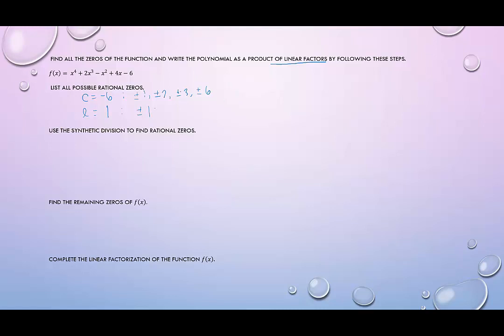But in this case, since it's only positive and negative 1, it's just going to be these six, eight values there. So the possible rational zeros would be positive or negative 1, positive or negative 2, positive or negative 3, and positive or negative 6.